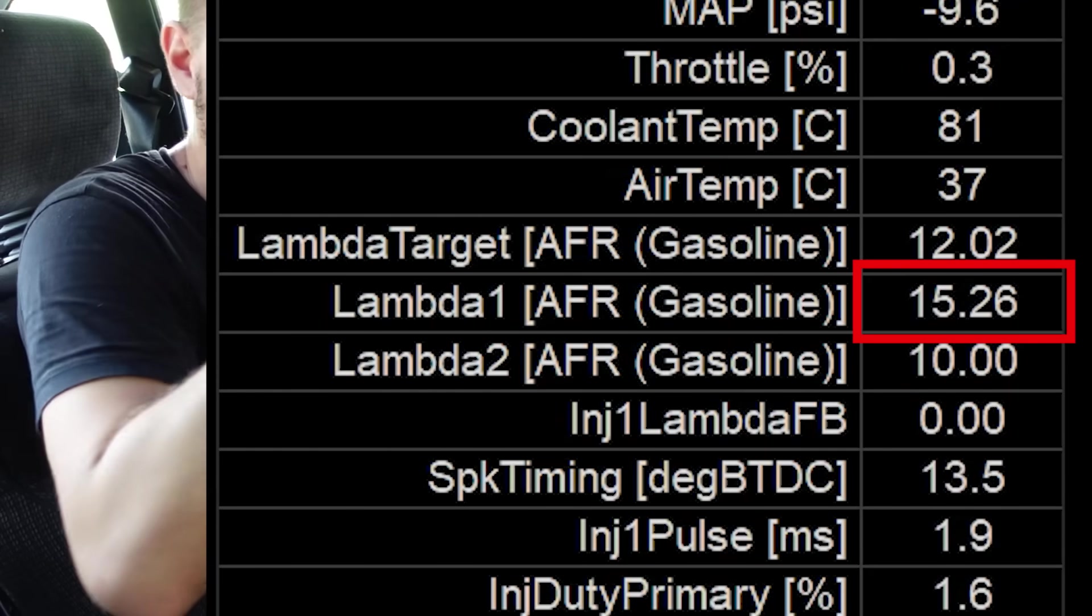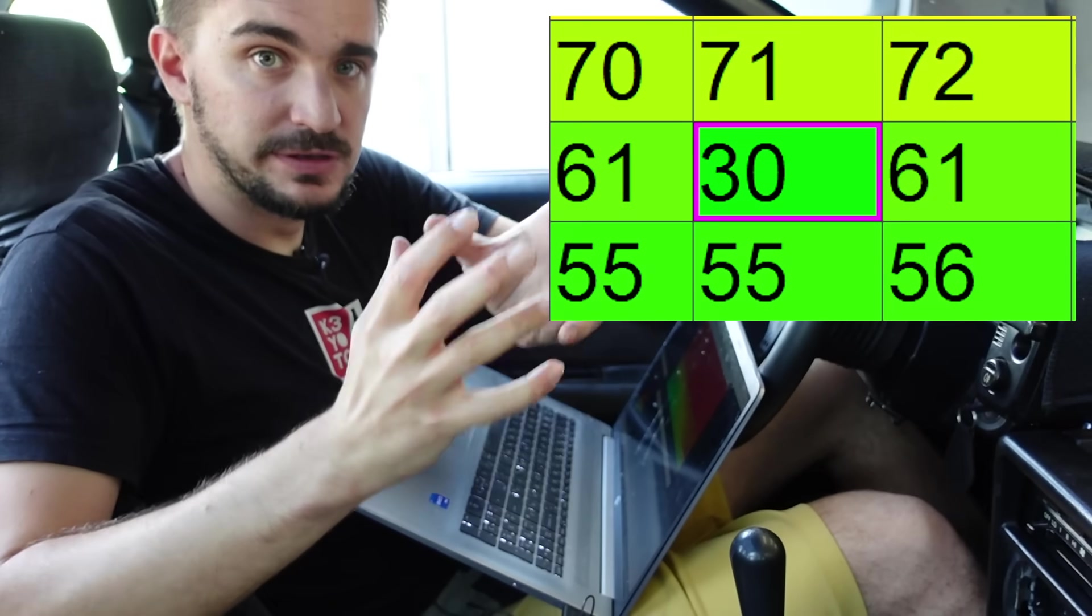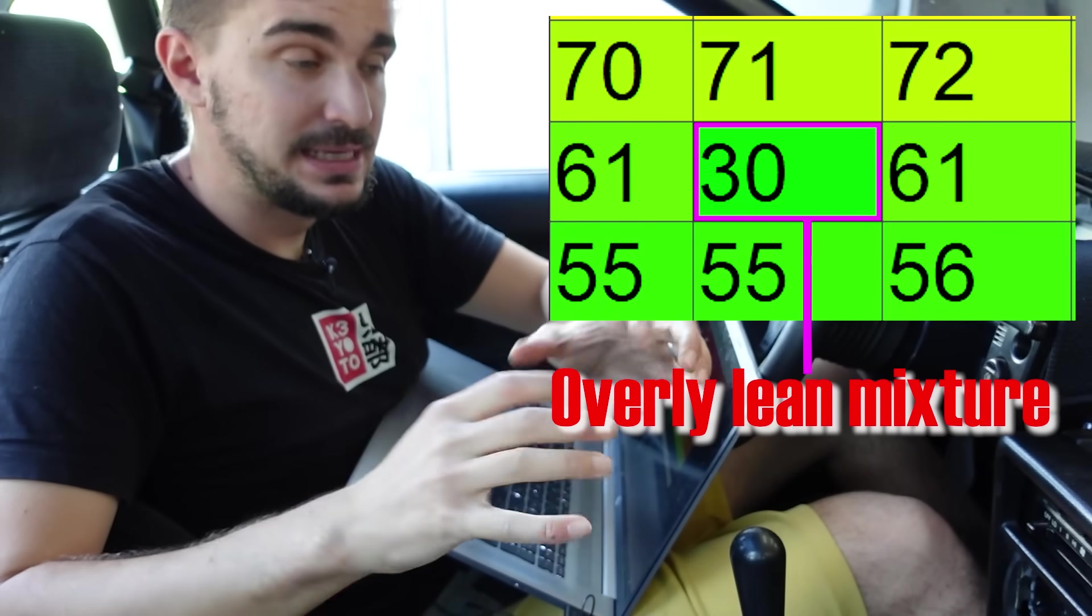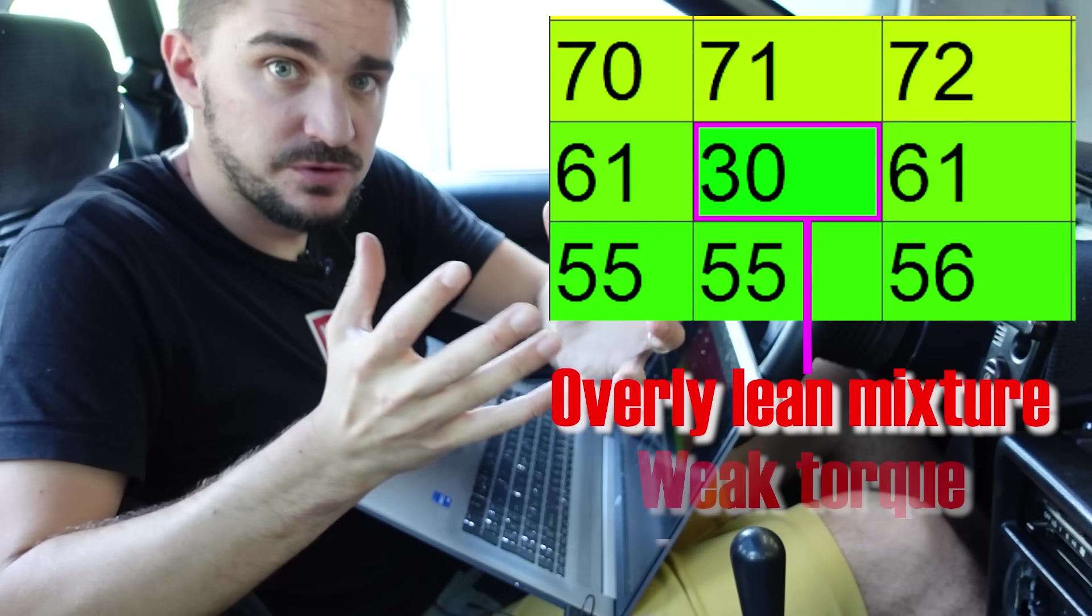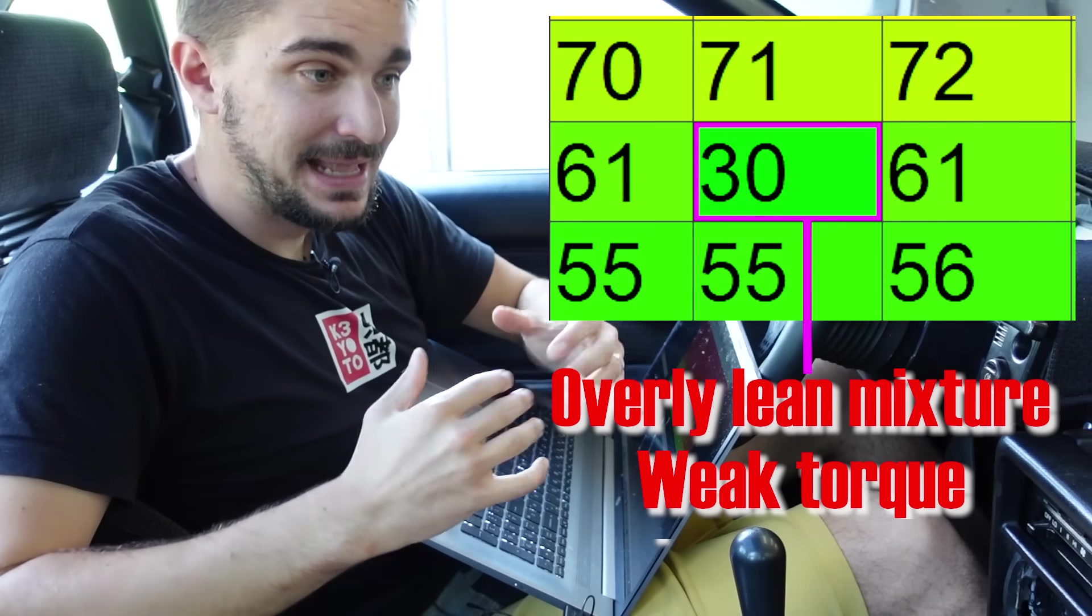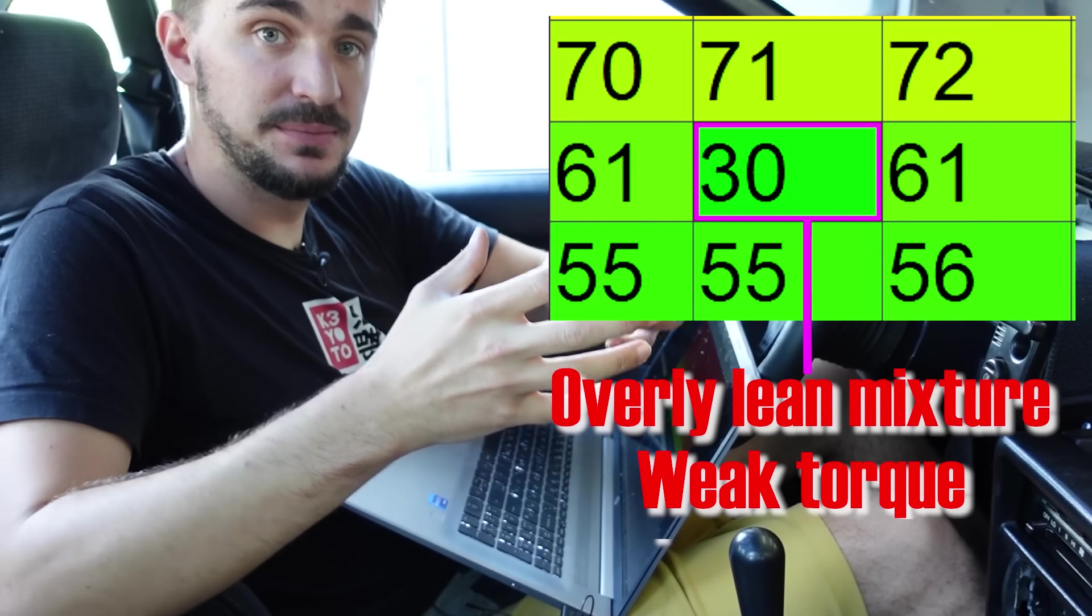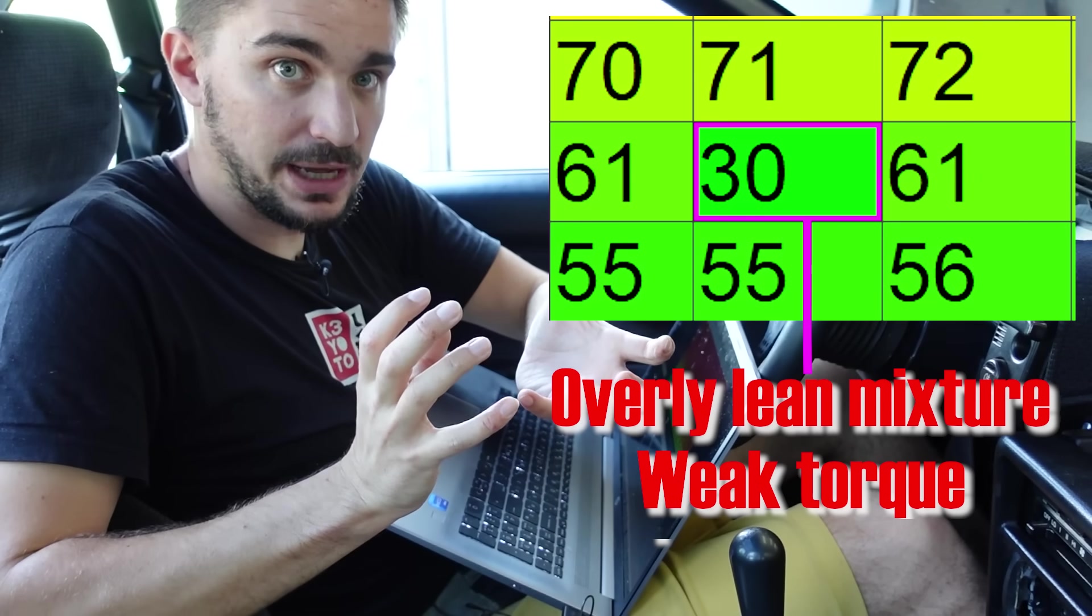Our air fuel ratio starts becoming very lean as the ECU cycles through the cell. Again we change it and now again we have a very stable air fuel ratio. The question is why did it start cycling? Well it started cycling because the ECU added too little fuel. There's too much air, too little fuel. And that's a lean mixture, an overly lean mixture for idling.